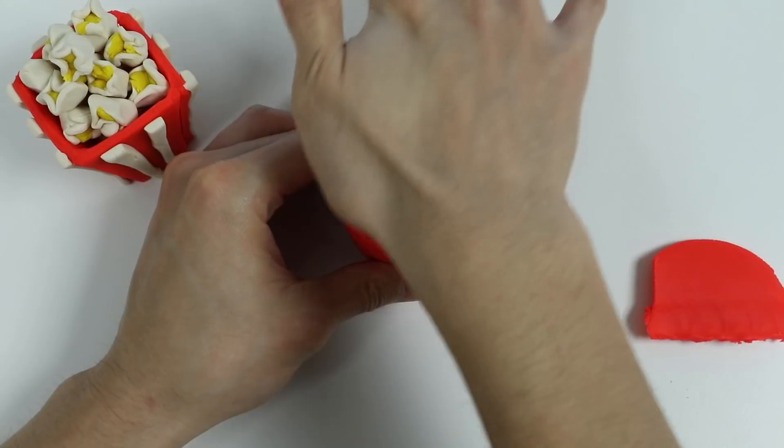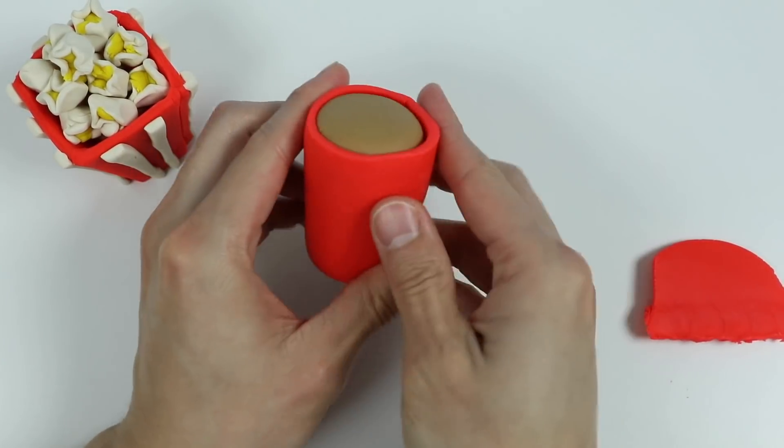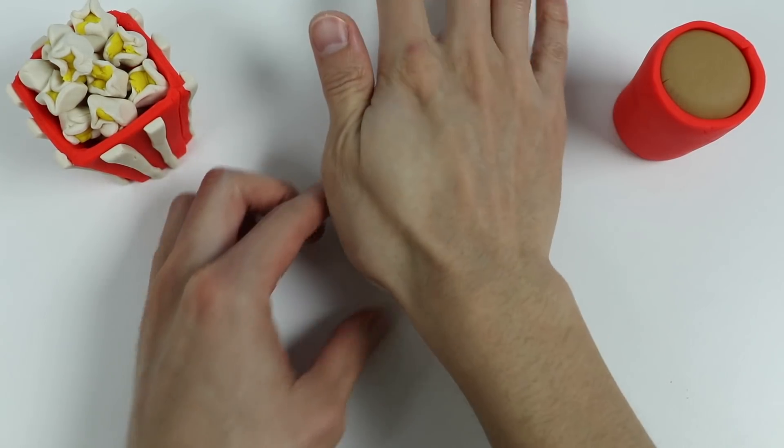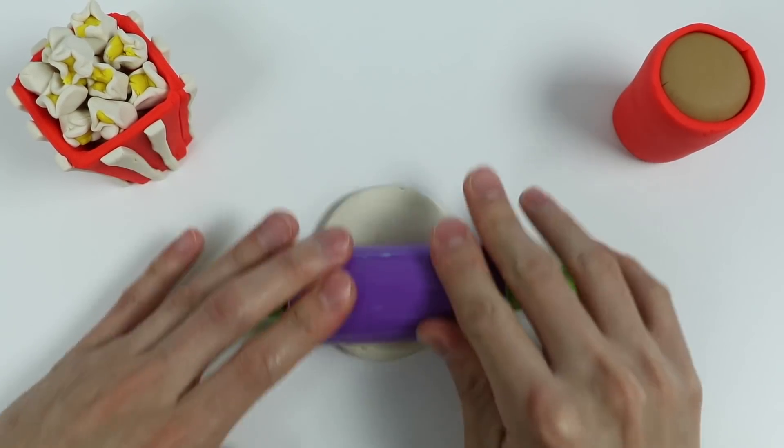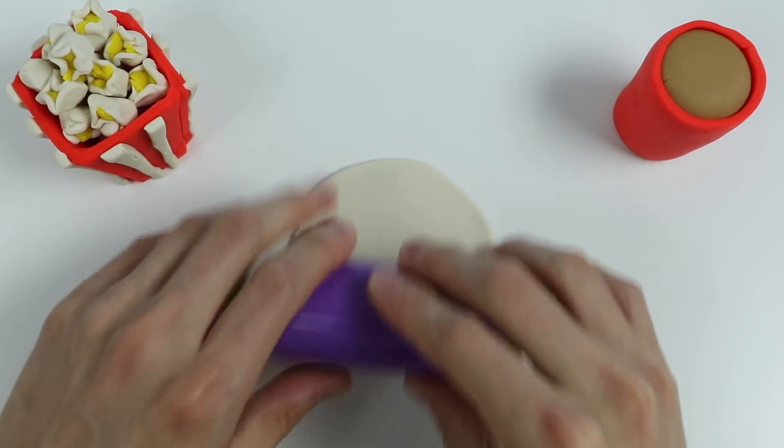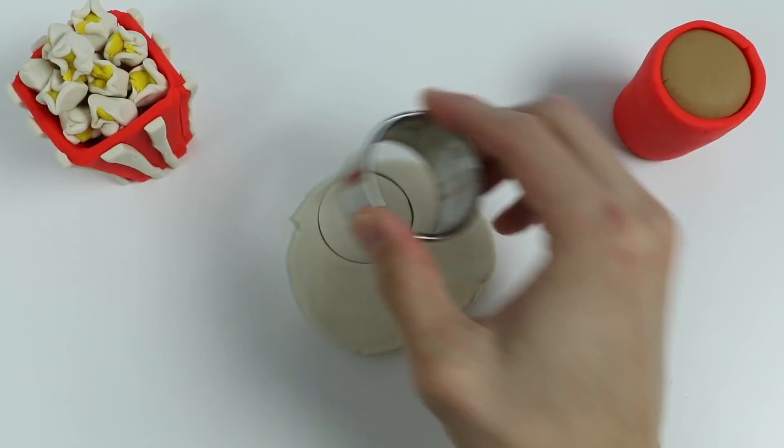Okay, now give me a second to shape this. Perfect! Now let's roll out some white Play-Doh. Alright, now let's use a couple of circle cutters.